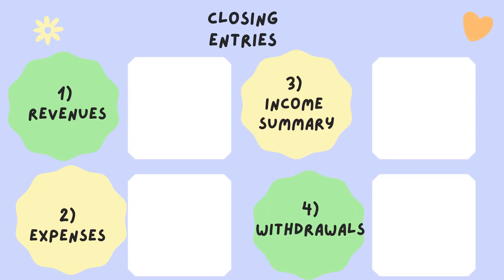Closing entries. The first closing entry is to close revenues. Revenues' normal balance is credit. To make this account balance equal to zero, you need to debit this account. So, revenues are credit nature; to close them, I need to debit them. The entry will be revenues on the debit side to an account called income summary on the credit side. This account is not a real account — you're not going to see it in the trial balance. We just use it for closing revenues and expenses.